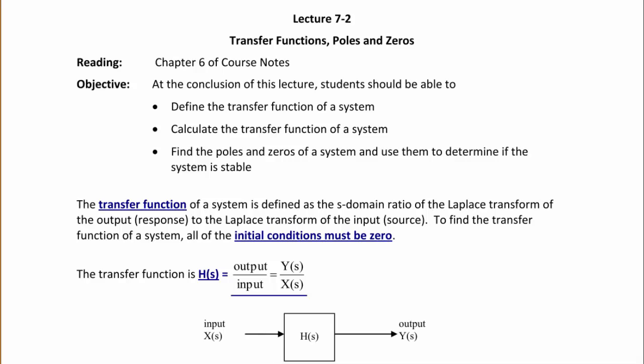The transfer function of a system is defined as the s-domain ratio of the Laplace transform of the output response to the Laplace transform of the input, or source. To find the transfer function of a system, all of the initial conditions must be zero, and the transfer function is defined to be H(s) equal to Y(s) over X(s). Notice that H(s) is the Laplace transform of the impulse response, h(t).